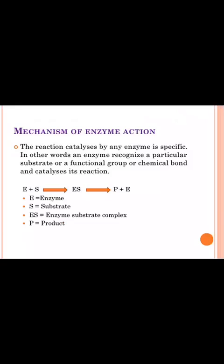The reaction catalyzed by any enzyme is specific. As we know, each enzyme is specific for a specific reaction. Enzyme recognizes a particular substrate, functional group, or chemical bond and catalyzes its reaction. Initially, the enzyme locates and recognizes the substrate and combines with it to form the enzyme-substrate complex, which then catalyzes the reaction. Products are formed and the enzyme separates out, remaining unchanged at the end of the reaction. Here E represents enzyme, S represents substrate, ES is the enzyme-substrate complex, and P is the product.